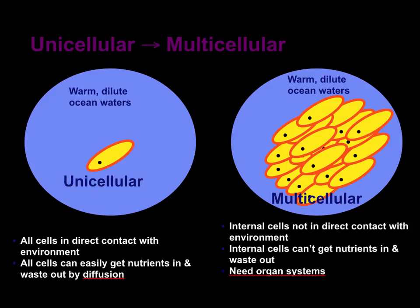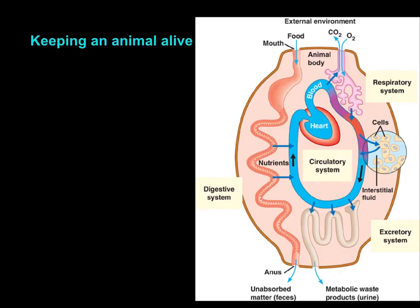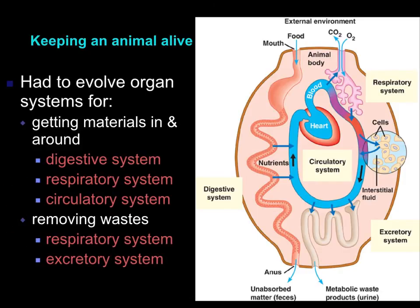Most animals and plants are complex organisms made up of millions of cells. Different parts of the organism perform different functions. Information is transferred between these different parts and helps to regulate the levels of substances in the organism. Multicellular animals have had to evolve organ systems for getting materials in, moving them around — for example, your digestive system, respiratory system, and circulatory system — and then removing wastes, for example, your respiratory system and excretory system.